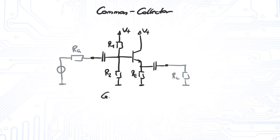The common collector amplifier has a voltage gain of approximately 1 and transforms the input and output impedances.